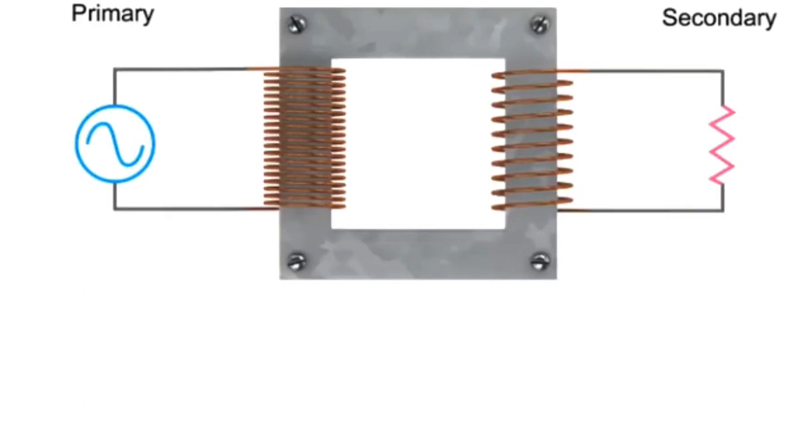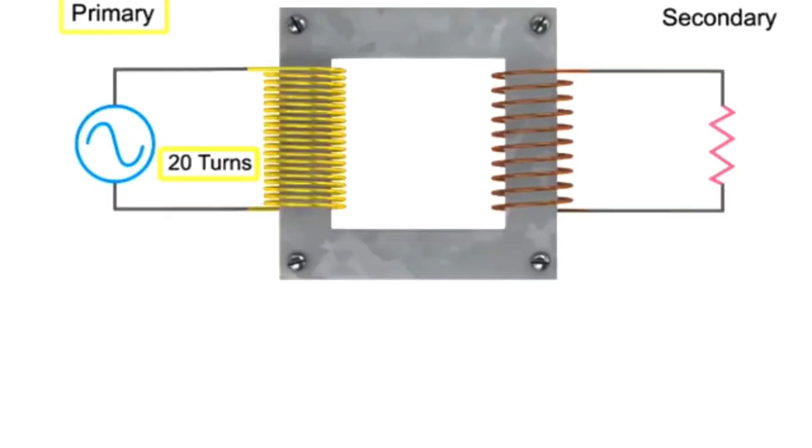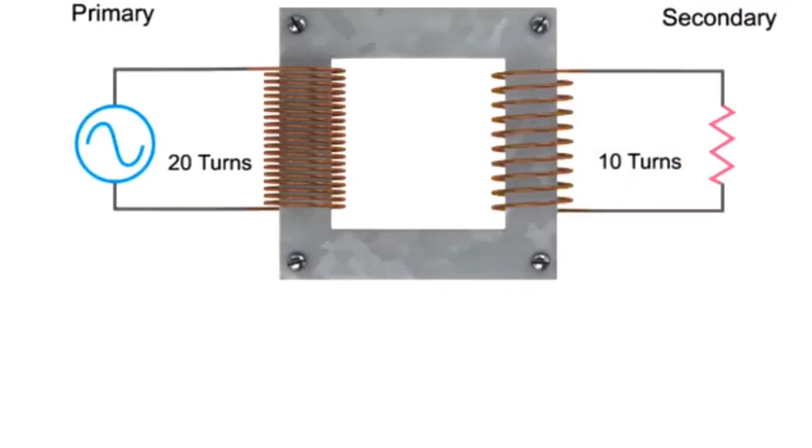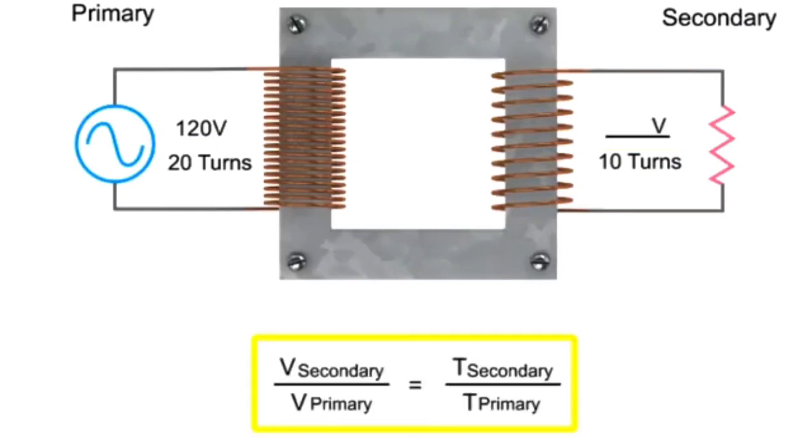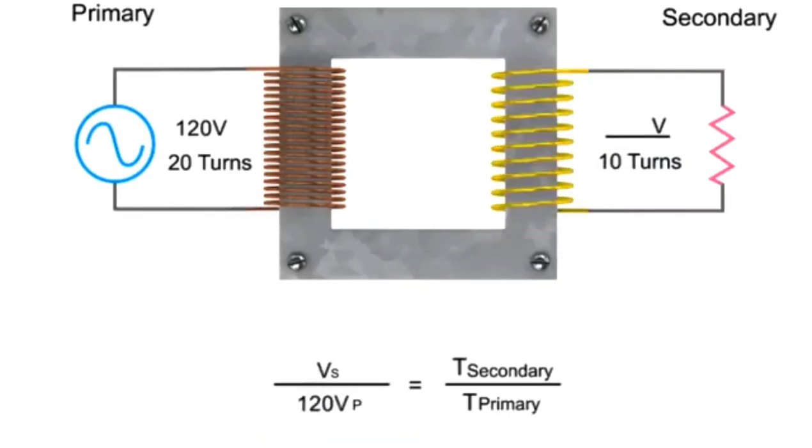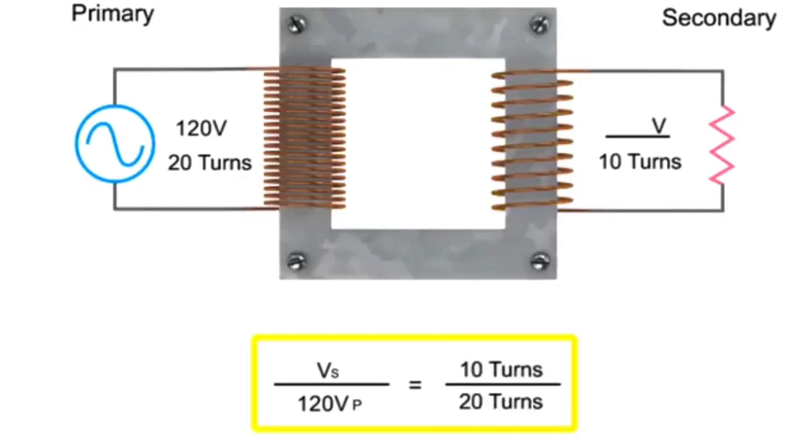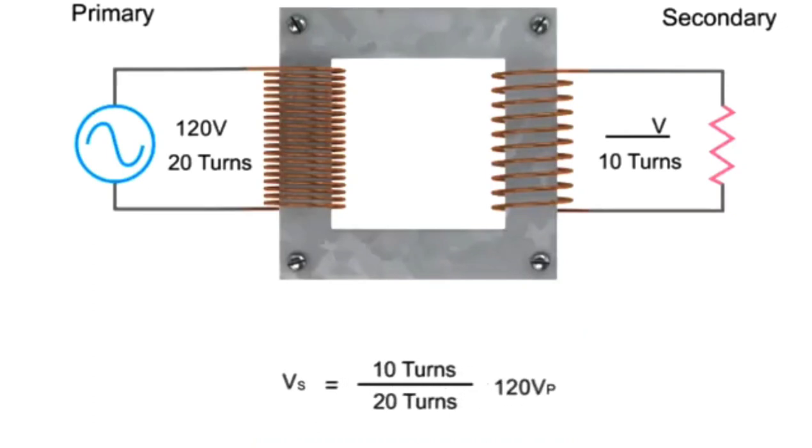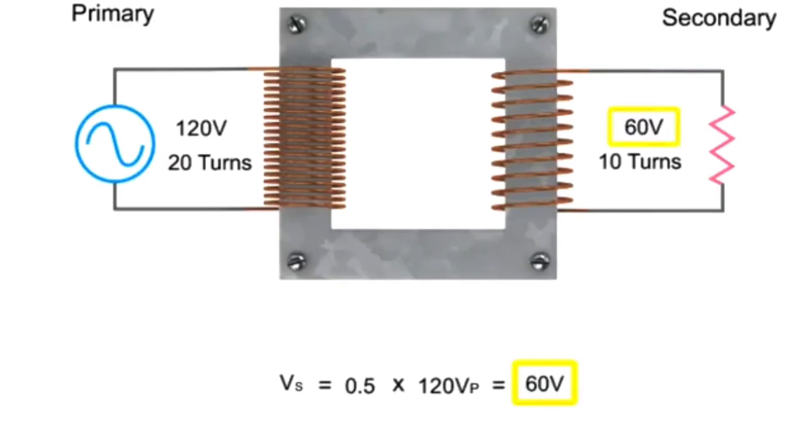In this example, we have 20 turns on the primary coil and 10 turns on the secondary coil. To determine the decrease in voltage occurring in this step down transformer, we can use a simple ratio formula. This formula simply states that the secondary voltage to primary voltage ratio is the same as the secondary coil to primary coil turn ratio. Rearranging the formula and then dividing 10 turns by 20 turns, we get 0.5 multiplied by 120V. This results in a calculated step down voltage of 60 volts.